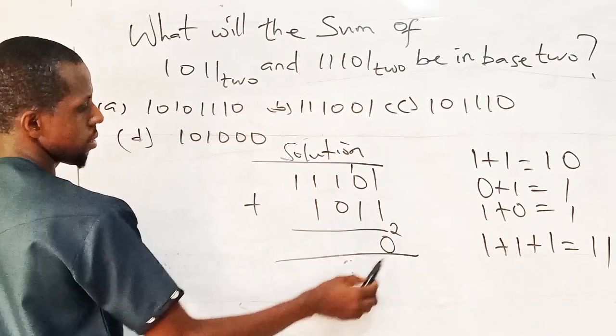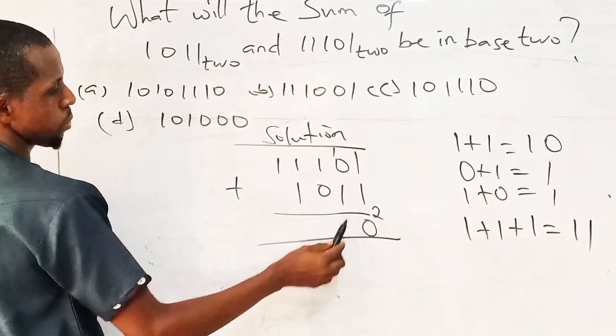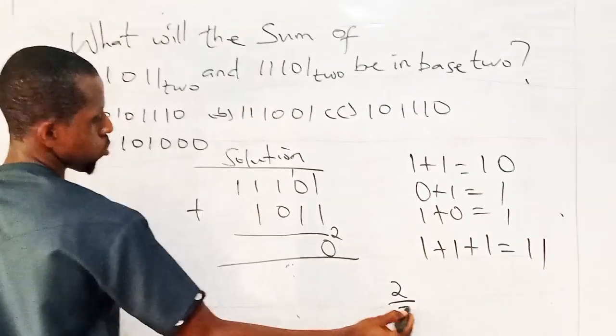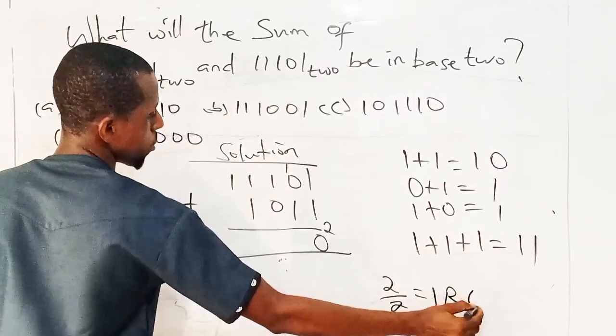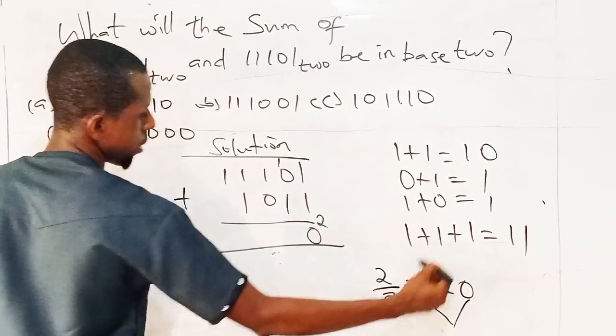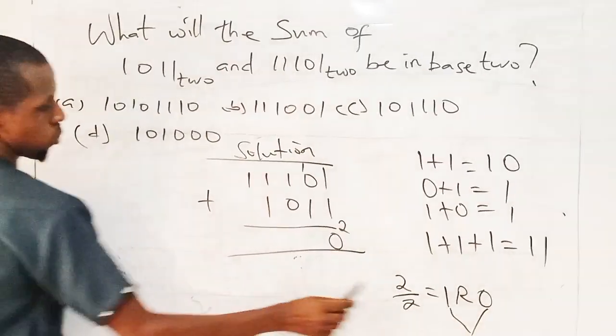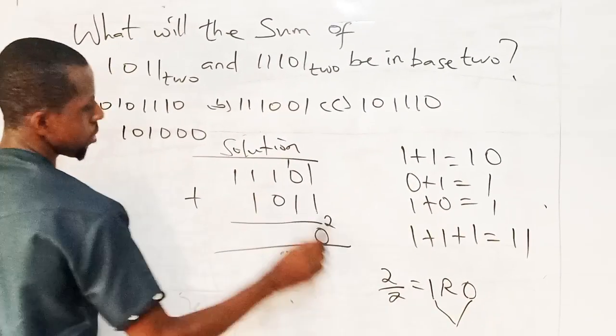Why is it 10? It is 10 because I said 1 plus 1 is 2. Normally it's 2. Divide by base 2, you have 1, you have 0. So I pick this together as 10. And I said 1 plus 1 is 10 in number base. So I have my 0, I carry my 1.